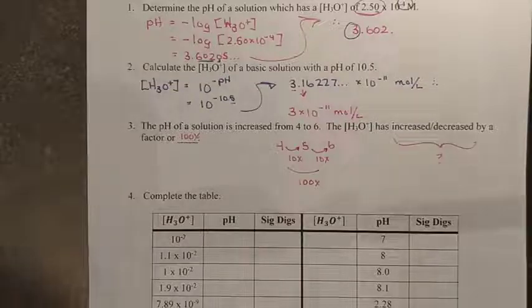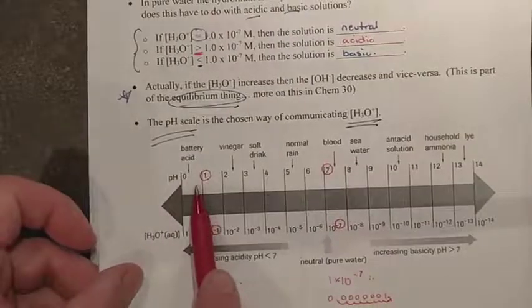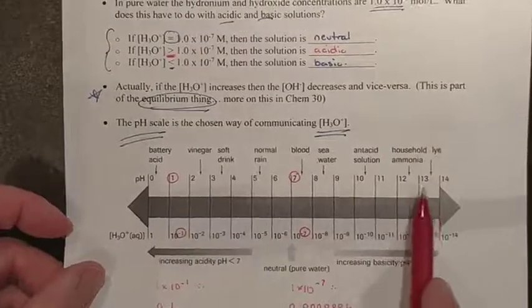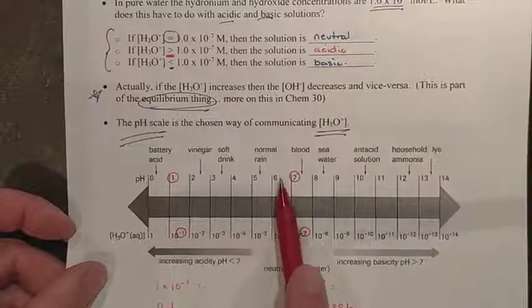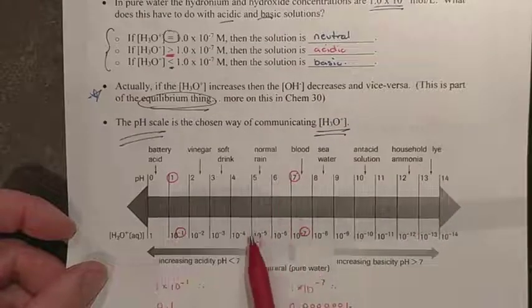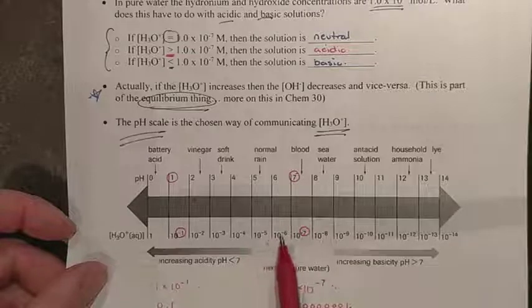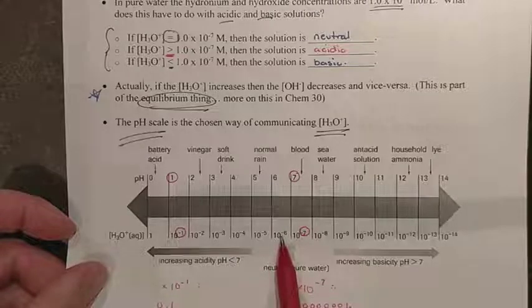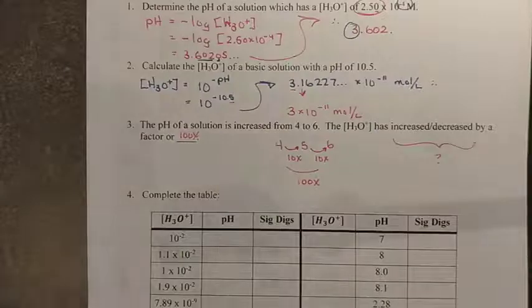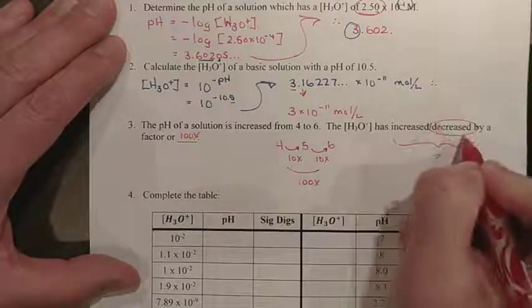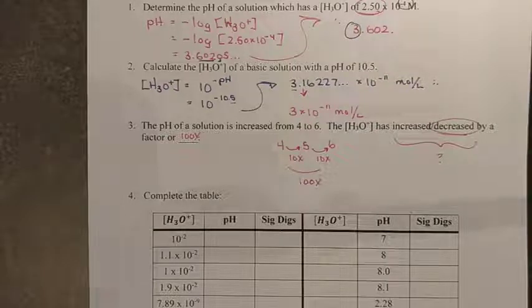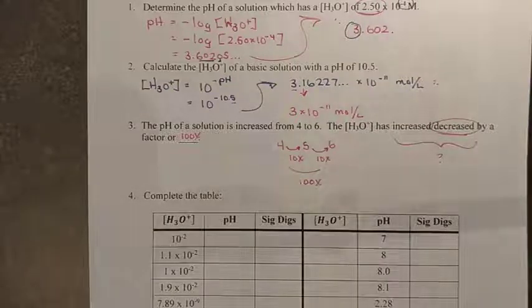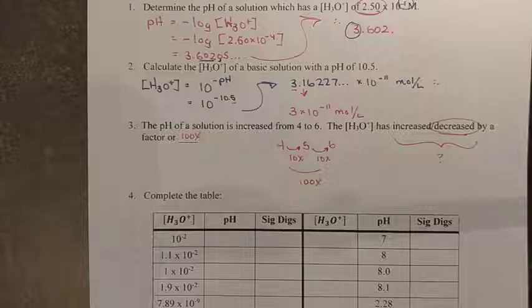Remember, the most acidic numbers on our pH scale are down here with low values. The most basic are up here with the high values. And so you are moving towards the basic side, which means your concentration of hydronium is going down. You're becoming more dilute if you want to look at it that way. So that means to increase pH number has decreased the amount of hydronium.